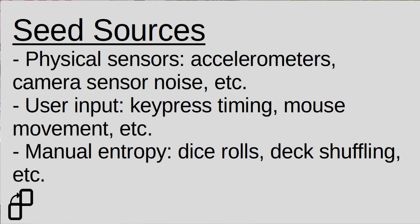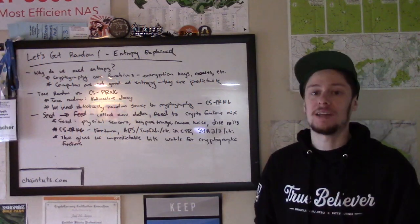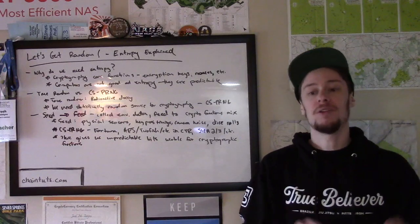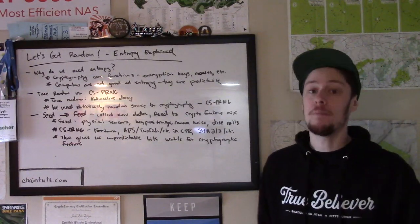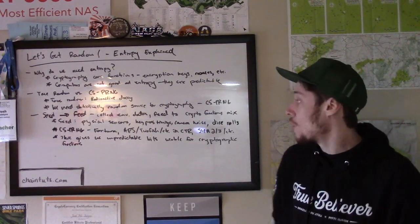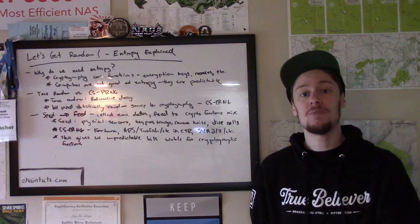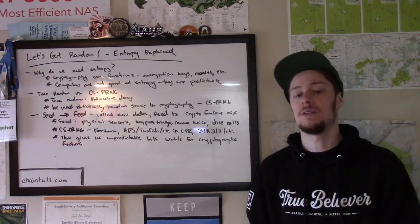We can use things like key press timings. People don't perfectly press the keys in sync every single time. Many modern operating systems use this as a source of seed data. We can use camera noise. Camera sensors are imperfect, and so the way they sense environmental noise in the light can be mixed up and used as a random source.